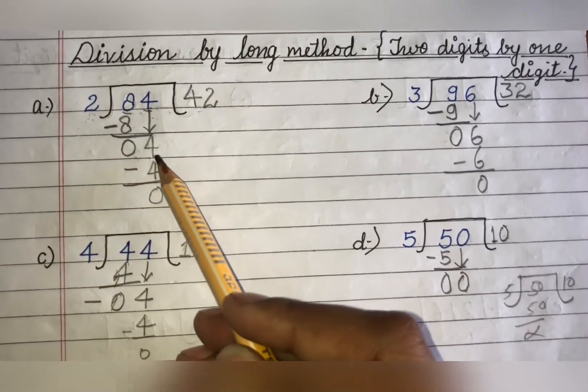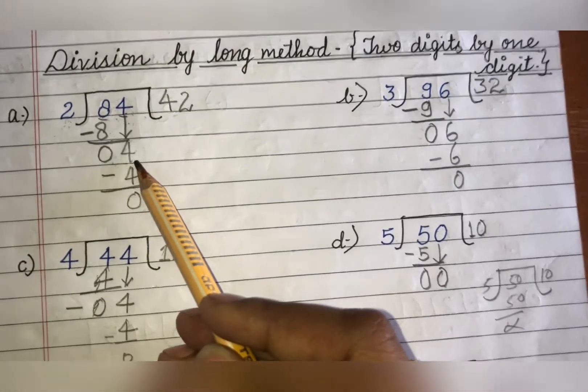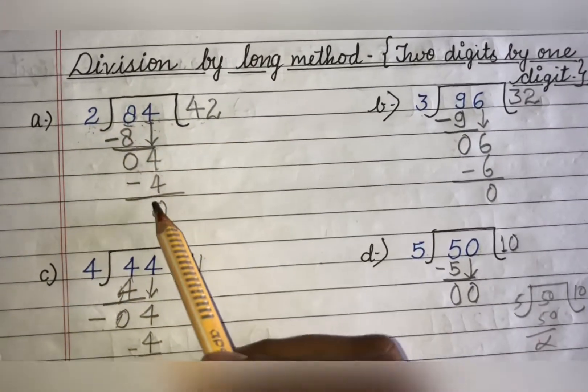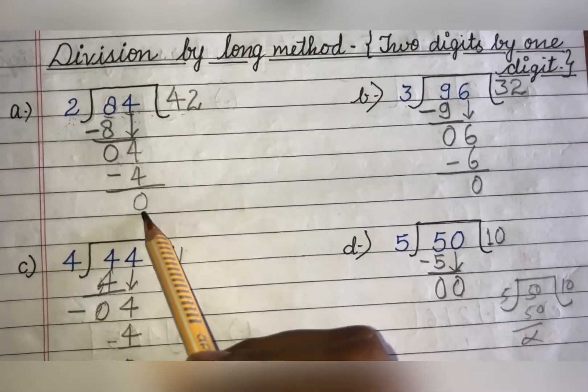Then you will take 4 and write the table of 2 until you get 4. 2 1 is 2, 2 2's are 4. 2 2's are 4, minus again you got 0.